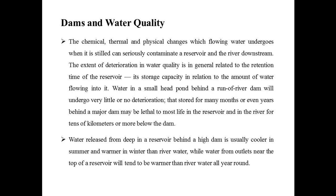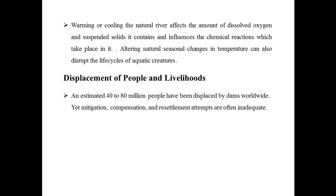Water released from deep in a reservoir behind a high dam is usually cooler in summer and warmer in winter than river water, while water from outlets near the top of the reservoir will tend to be warmer than river water all year around. Altering the natural river's temperature affects the amount of dissolved oxygen and suspended solids it contains and also influences the chemical reactions which take place in it. This alteration of natural seasonal temperature changes can also disrupt the life cycle of aquatic creatures.